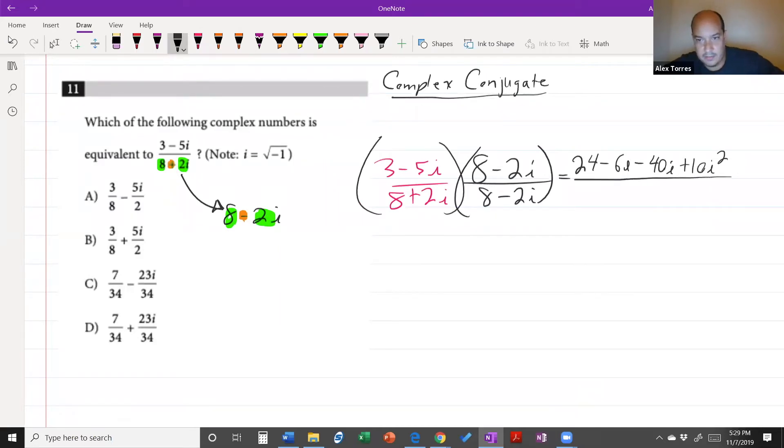And on the bottom first times first, 64, outer times outer, inner times inner, last times last. Okay, exactly.